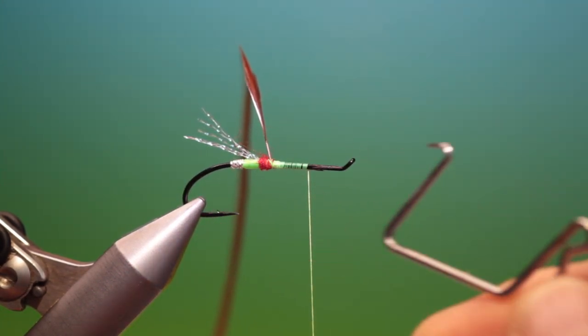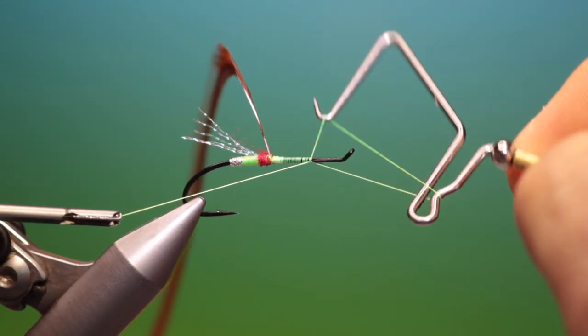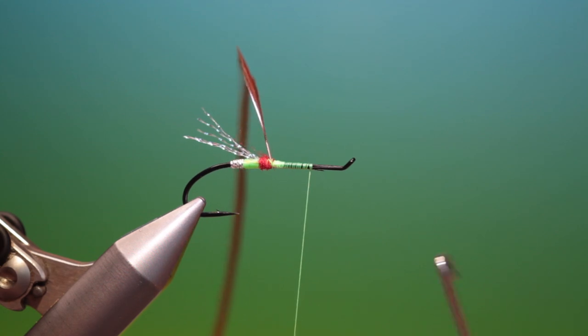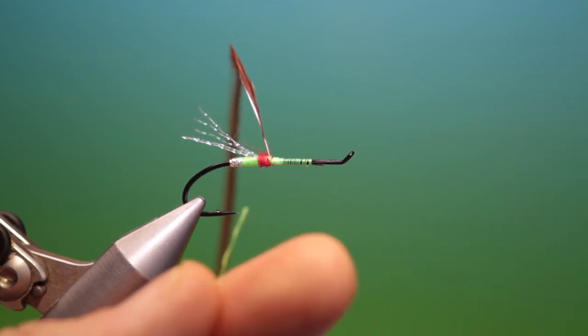And we'll take our whip finisher and we just put a stopper in there and we can remove that thread.